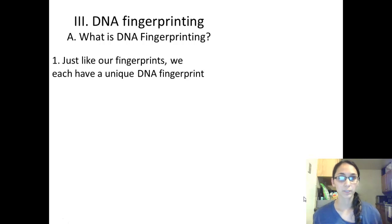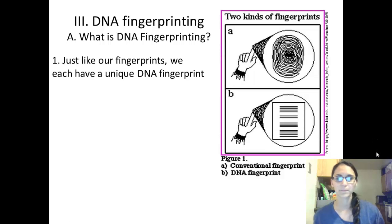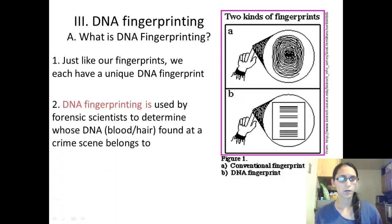Just like our fingerprints, we each have a unique DNA fingerprint. Here in this little picture we have our fingerprint from our finger and then this is a DNA fingerprint. So DNA fingerprinting is used by forensic scientists to determine whose DNA is found at a crime scene. They are trying to figure out whose DNA it belongs to.